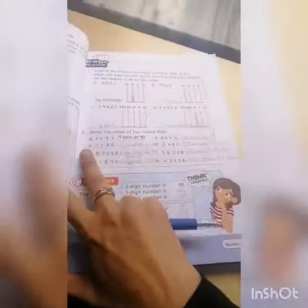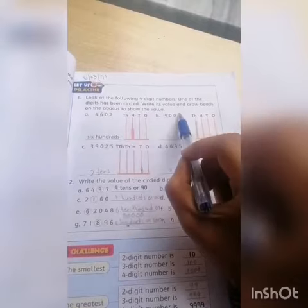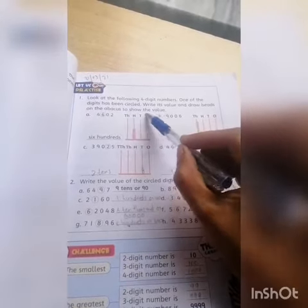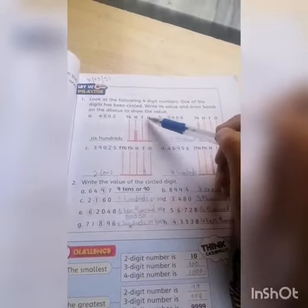Today our question is: look at the following four-digit numbers. One of the digits has been circled. Here are the four-digit numbers and one number has been circled. Write the value and draw beads on the boxes to show the values. You have to draw the values.